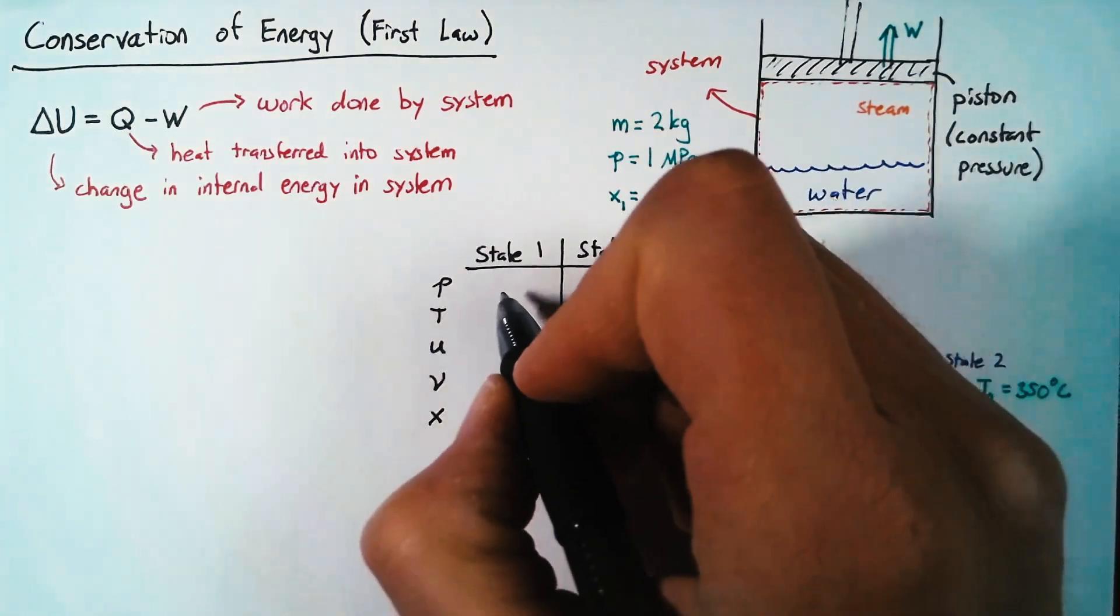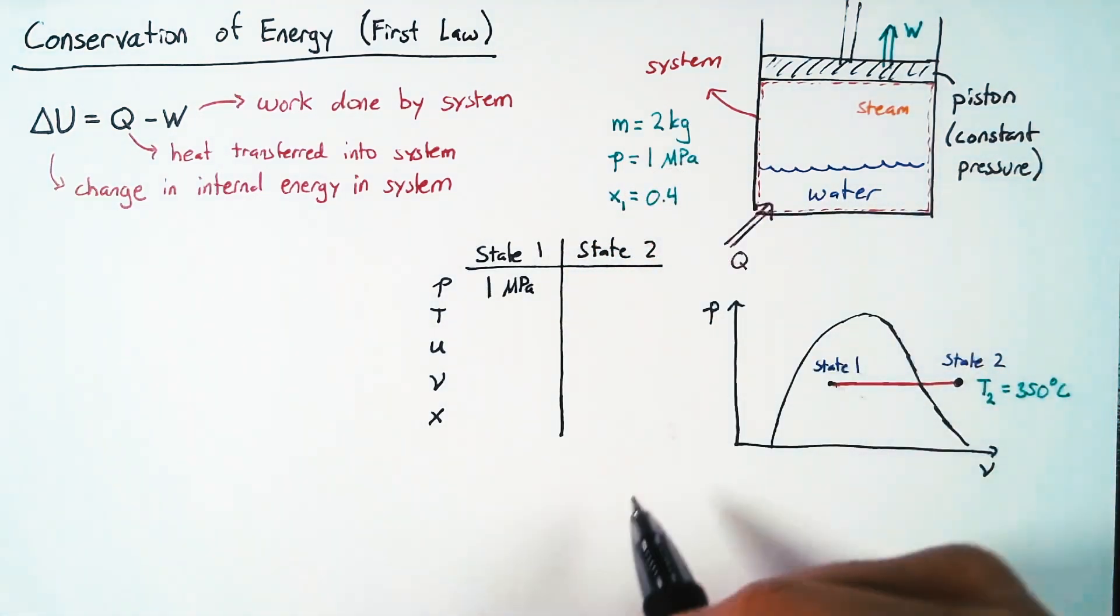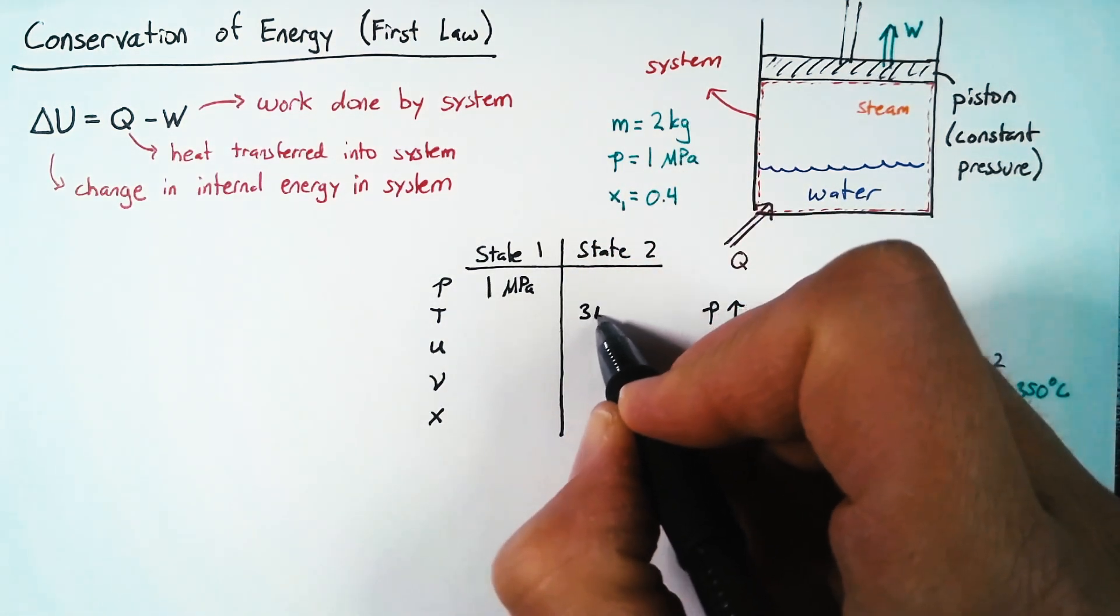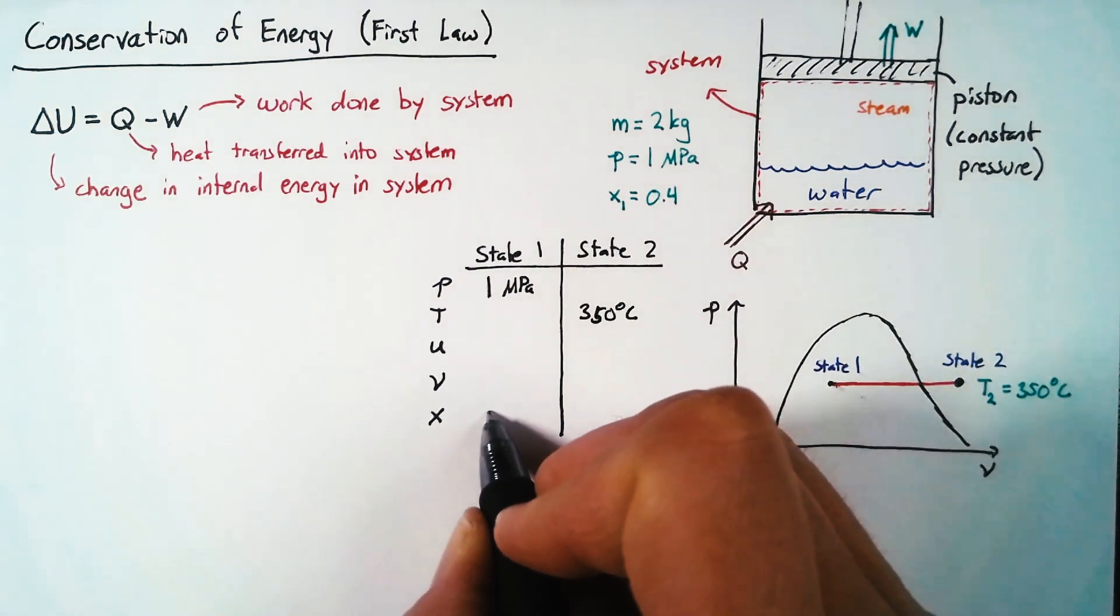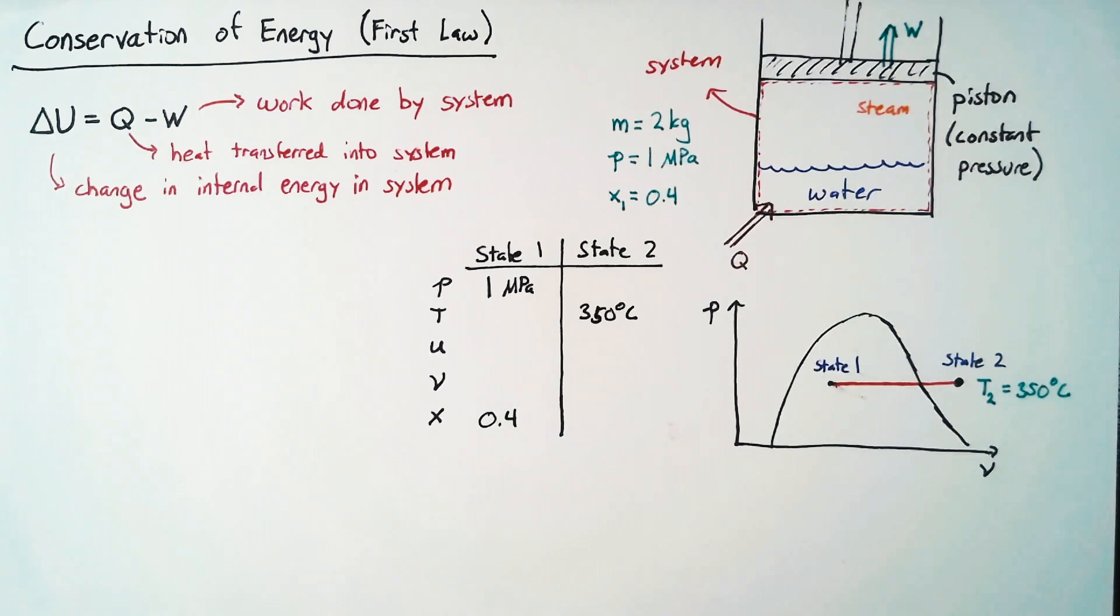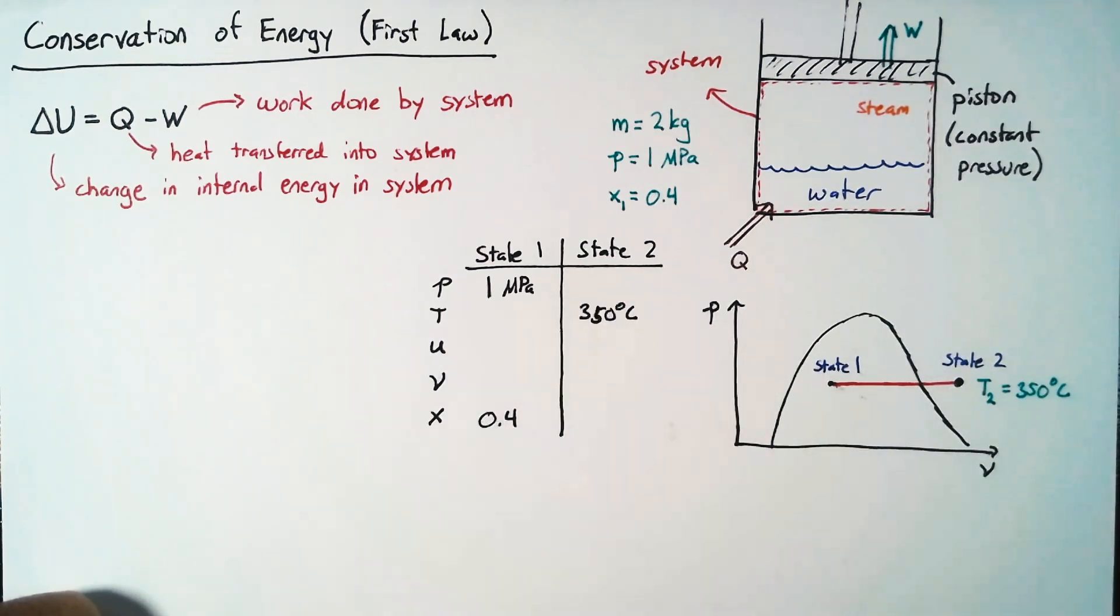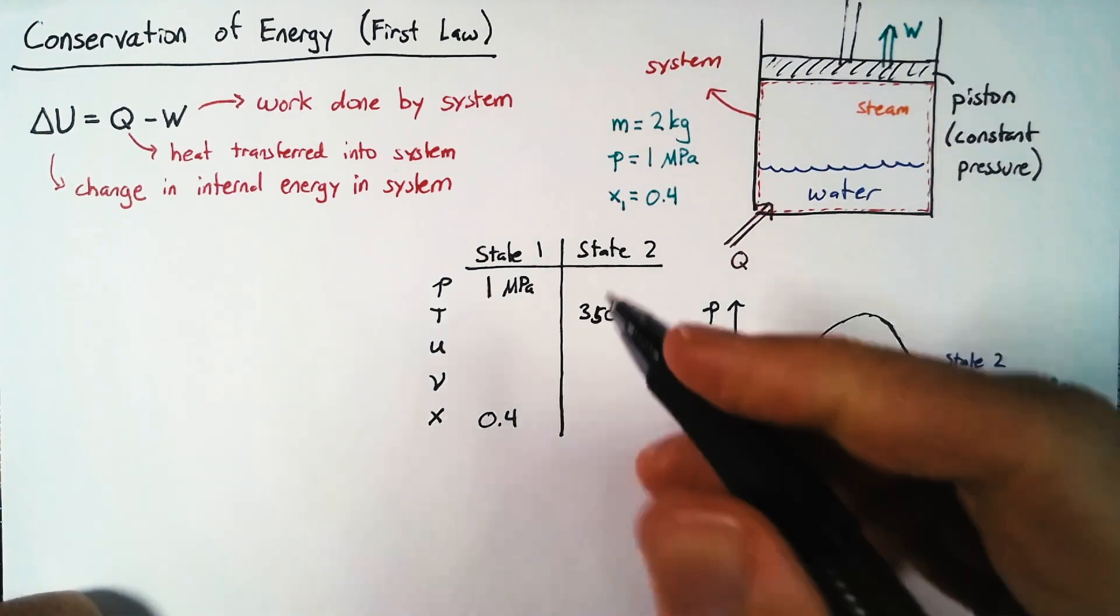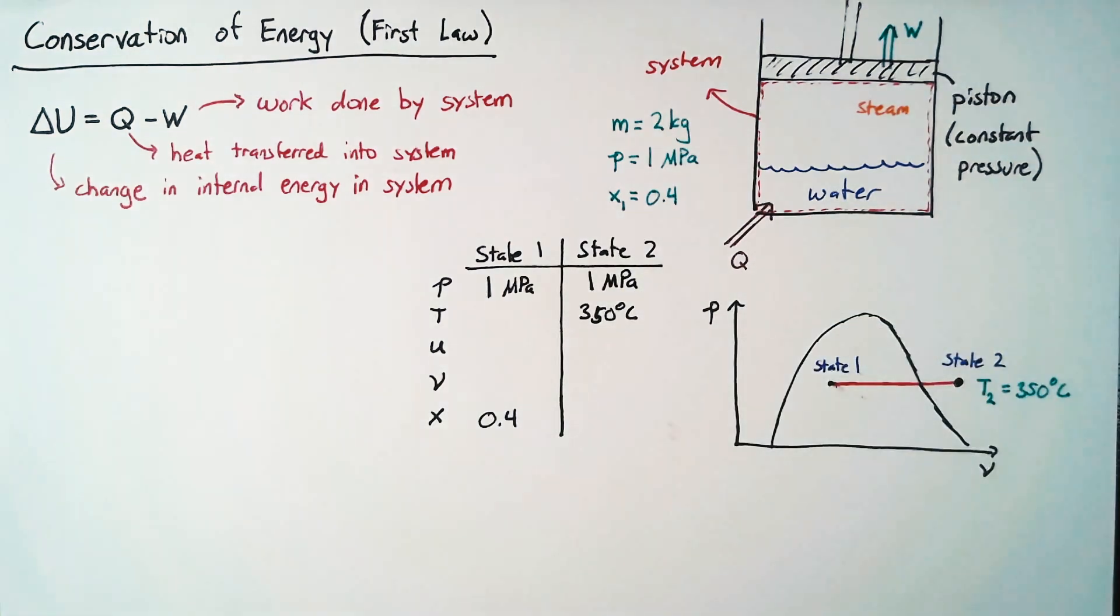So looking at just things that are given, we have one megapascal at state 1. We have 350 degrees Celsius for state 2. And then our quality for state 1 is 0.4. Additionally, we know that this process is under constant pressure. And so the pressure for state 2 has to be the same as that for state 1. So state 2 will also be at one megapascal.